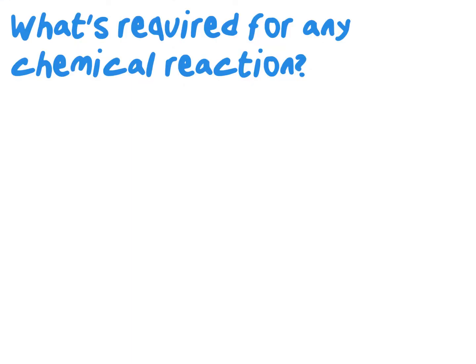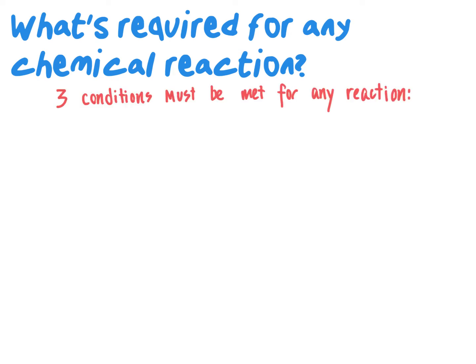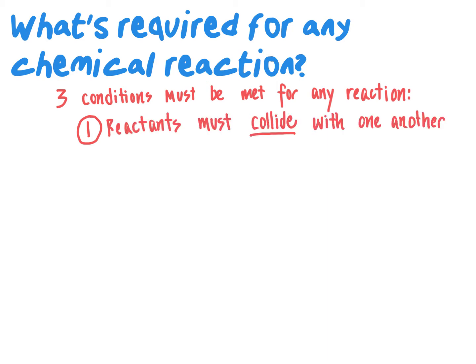The first thing we need to explore is what is required for any chemical reaction to take place — regardless of whether the reaction is catalyzed by an enzyme. There are, in general, three conditions required. The first condition is that if there is more than one reactant, those reactants have to collide with one another. If you have an acid on one side of the room and a base on the other, and they are physically separated, there will be no reaction. They must come into contact in order to react.